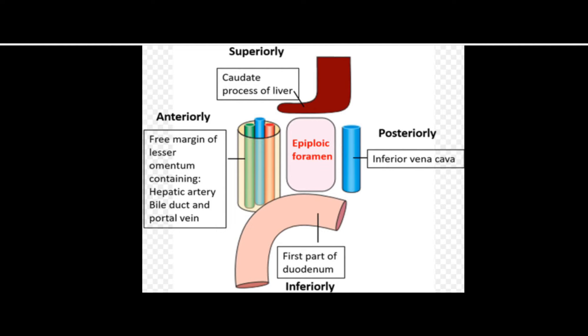The posterior boundary is formed by the inferior vena cava. Along with the IVC, we have the right suprarenal gland — which is not shown in this figure — but the right suprarenal gland forms the posterior boundary. On the superior side we have the caudate process of the caudate lobe of the liver.